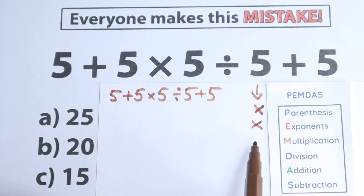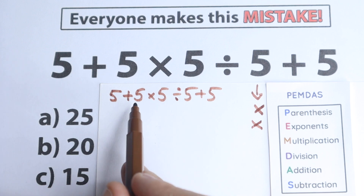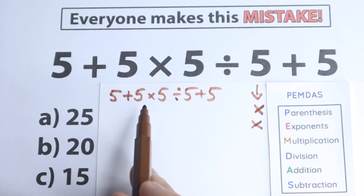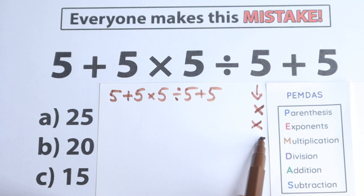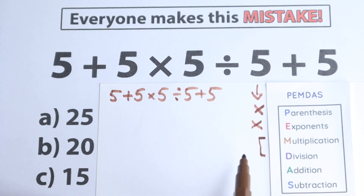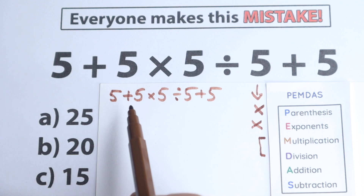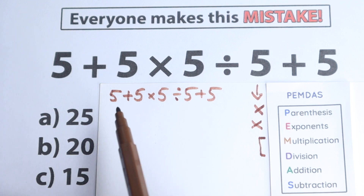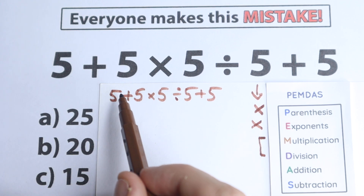The next step is multiplication. A lot of students make a common mistake here — they say, according to PEMDAS multiplication comes first, so we need to multiply first. This is not correct, because we need to look at it as a group. Multiplication and division are one common group, and we need to look at them together. We need to find all multiplication and division signs and look at them from left to right.